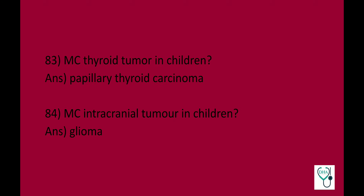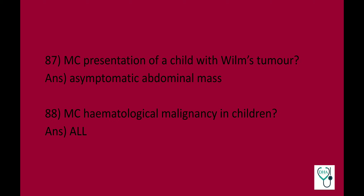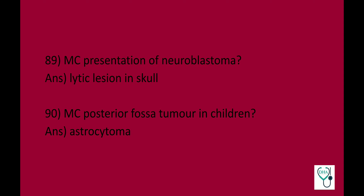Childhood tumors. Most common thyroid tumor in children is papillary thyroid carcinoma. Most common intracranial tumor in children is glioma. Most common abdominal tumor in neonates is neuroblastoma. Deletion of chromosome 11 leads to Wilms tumor. Most common presentation of Wilms tumor is asymptomatic abdominal mass. Most common hematological malignancy in children is ALL (acute lymphoblastic leukemia). Most common presentation of neuroblastoma is lytic lesion in the skull. Most common posterior fossa tumor in children is astrocytoma.